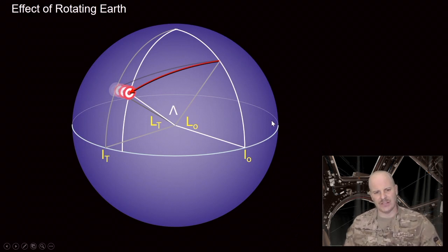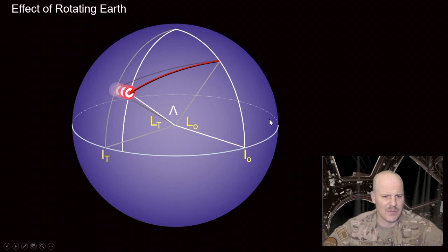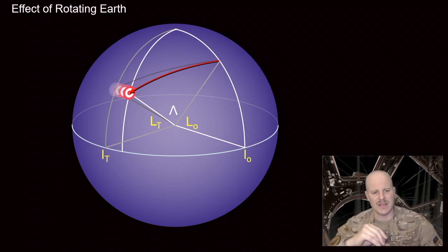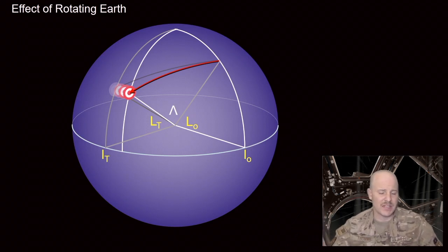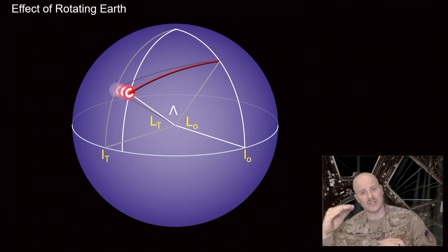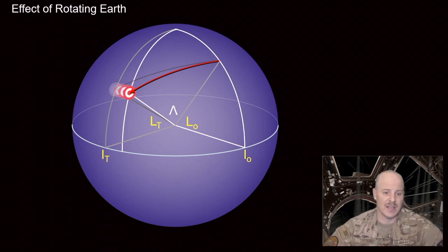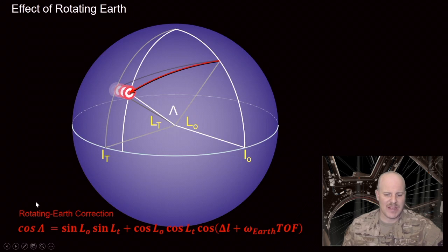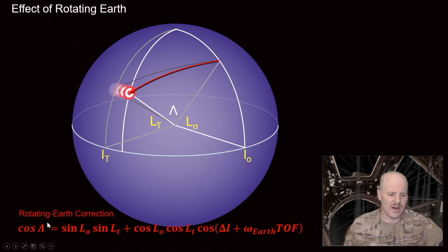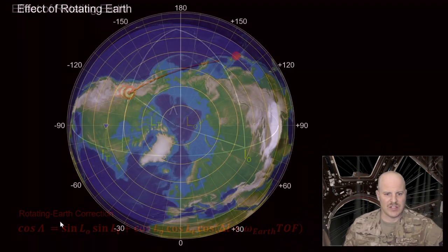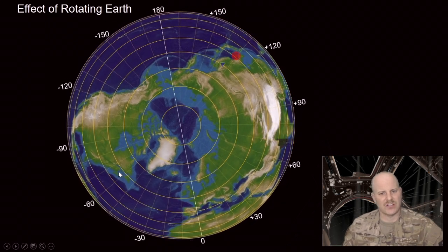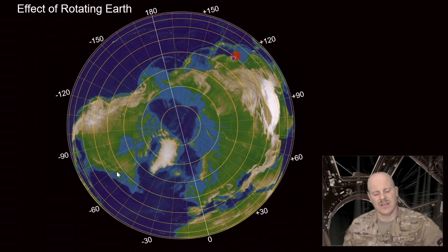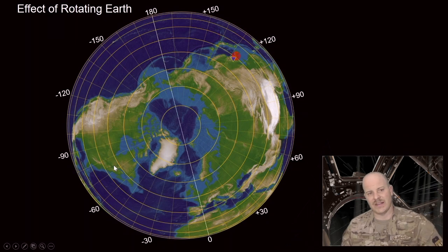We all know the earth is actually rotating, but most of what we've discussed assumed a non-rotating earth. What effect does a rotating earth have on a ballistic missile trajectory? A ballistic missile travels for maybe 30 minutes — if we don't account for the fact that our target is moving under us while we're trying to reach it, we'll be off target. There's an equation for this correction related to the Earth's angular velocity of 15 degrees per hour. As the Earth rotates, our target is spinning underneath us, so we need to anticipate where it's going to be and aim for that, not where it currently is.